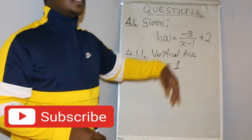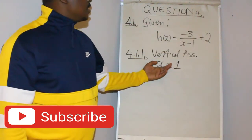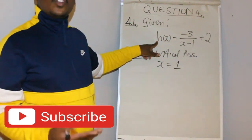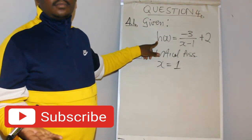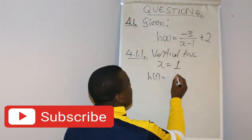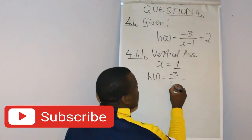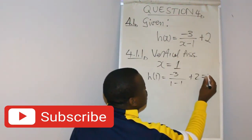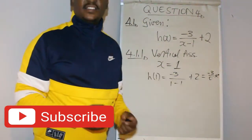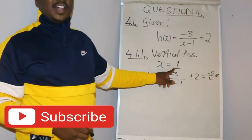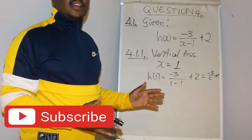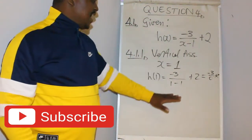We get x = 1 by transposing the negative one to the other side. This is because the function H will not be defined at x equals 1 — if we substitute x = 1, we get negative 3 over (1 minus 1) plus 2, which gives negative 3 over 0 plus 2. You cannot divide by zero, which is why we have the asymptote there.